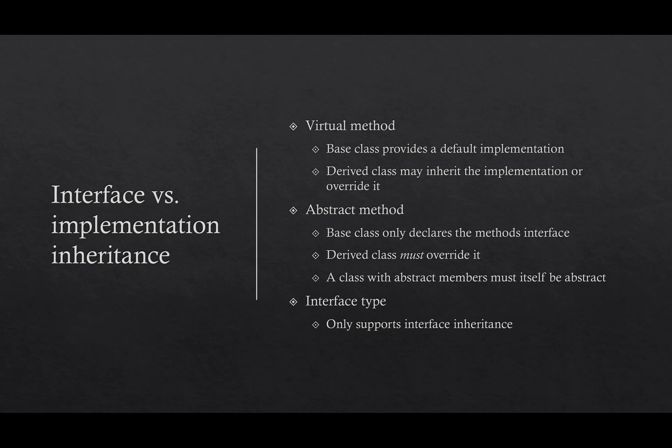I also showed virtual versus abstract methods, which is really about interface versus implementation inheritance. When we had the virtual method, the base class actually did provide a default implementation — even if it was just empty curly braces, there was an actual method there that could be called. And the derived class has the choice of either inheriting the base implementation or overriding it. On the other hand, if you have an abstract method, the base class doesn't even provide a method at all — there's nothing that can be literally called at runtime. All the base class does is declare the method: specifying its return value and parameters — just the interface of the method. The derived class must then override it, because there is no implementation to inherit. And any class that has abstract members must itself be abstract.